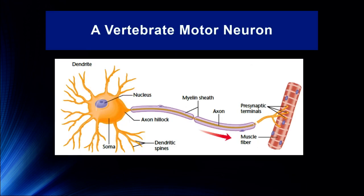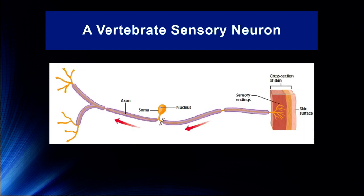A vertebrate motor neuron has a cell nucleus and an axon traveling down to the muscle fiber, covered by Schwann cells. Each branch of that axon intersects with a different muscle fiber, forming what is called a motor unit. A sensory neuron, by contrast, has information traveling in the opposite direction. We have sensory endings, say in the skin, that travel up through a cell body positioned between the sensory endings and the axon terminals, which synapse at the spinal cord, particularly with an interneuron.